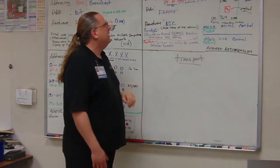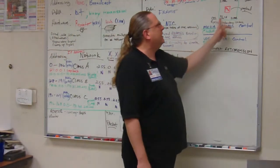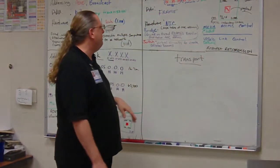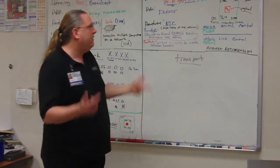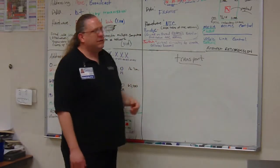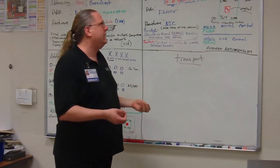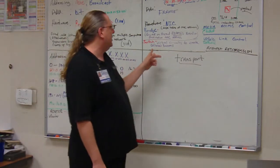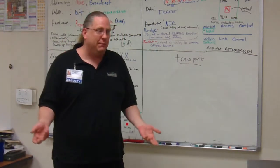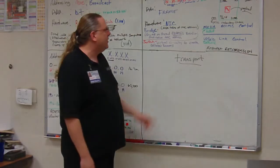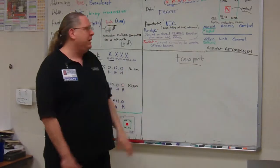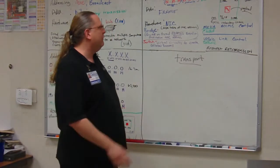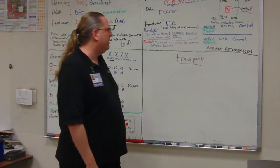At the data link layer, the addressing is the MAC address. When we add a source and destination MAC address along with the CRC, FCS, and payload, it's called a frame. NIC cards are concerned with that — they carry the MAC address. Bridges keep tables of MAC addresses to decide whether to forward or discard frames. Switches use virtual circuits to create collision domains by keeping a table of MAC addresses, knowing which physical port information last traveled through so only the intended receiver sees that traffic.